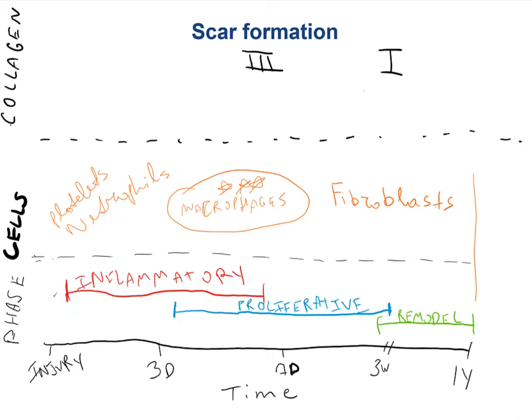This is a little diagram or table that I drew. Hopefully it'll make the understanding a little bit better. On the bottom we have time: time of injury, three days, seven days, three weeks, and a year. We have different phases of wound healing: inflammatory phase, proliferative phase, and remodeling phase. Also the cells involved in those phases, and the type of collagen you can see during those phases.